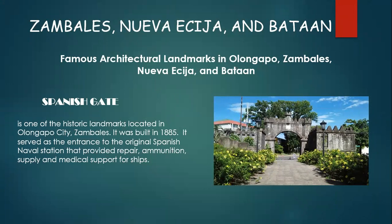We can also find a famous architecture in Olongapo City, Zambales — the Spanish Gate. It is one of the historic landmarks located in Olongapo, Zambales. It was built in 1885 and served as the entrance to the original Spanish naval station that provided repel, ammunition, supply, and medical support for ships.